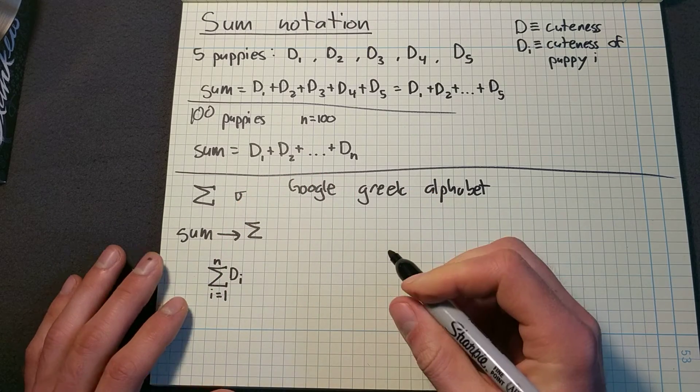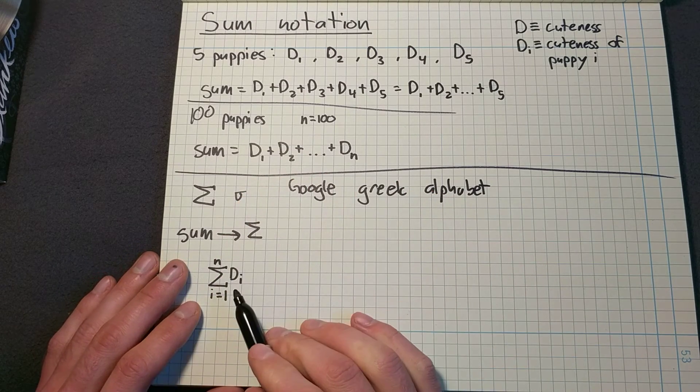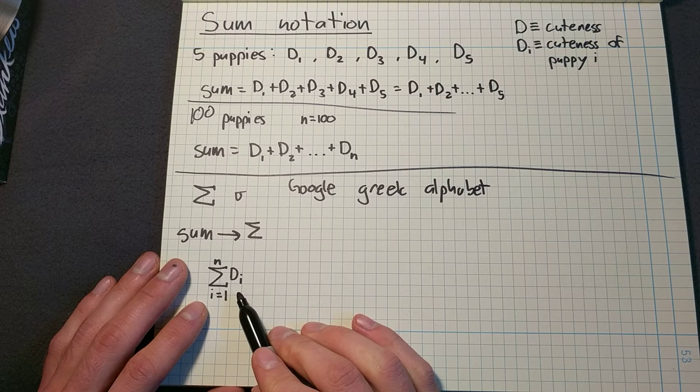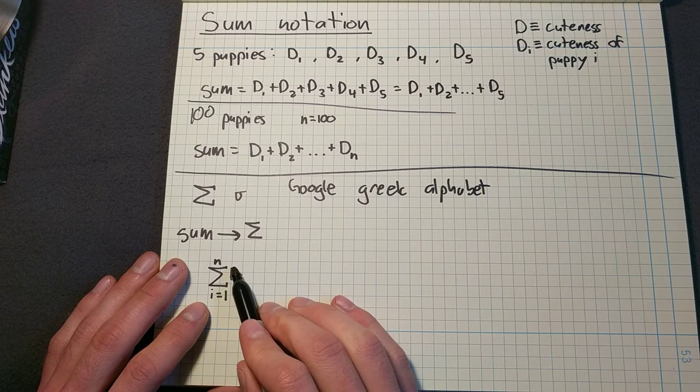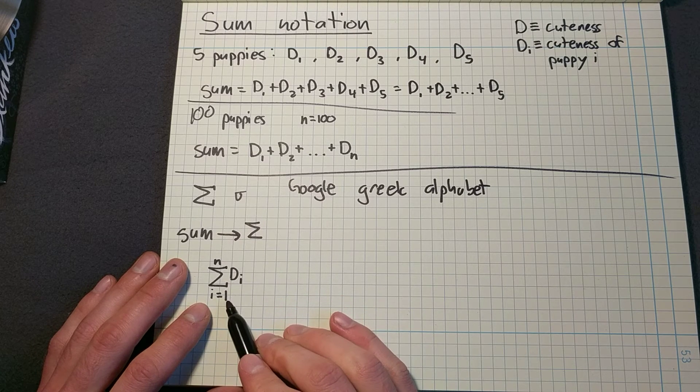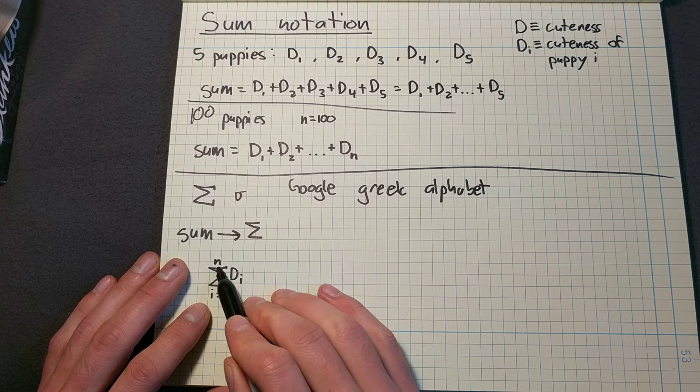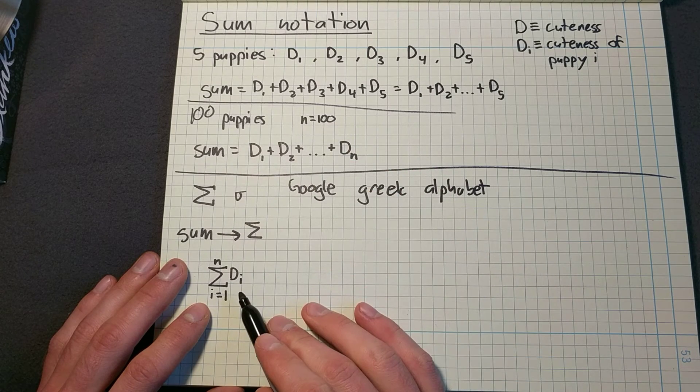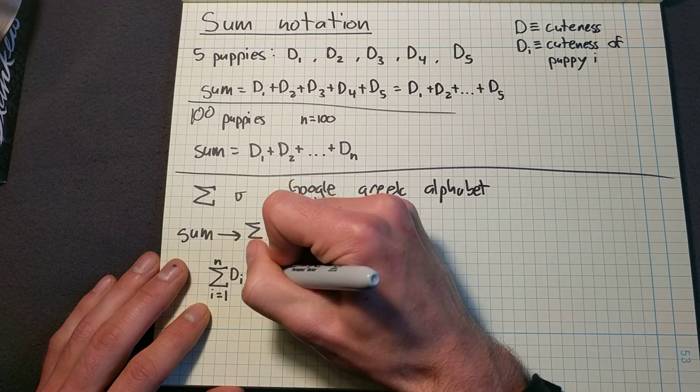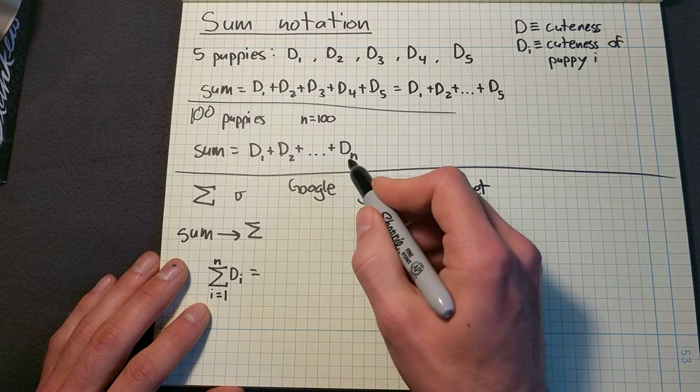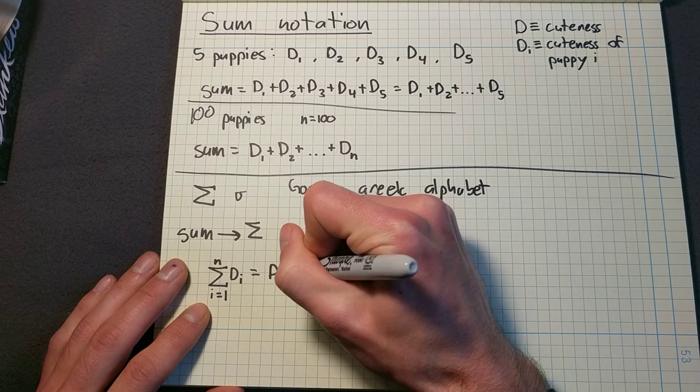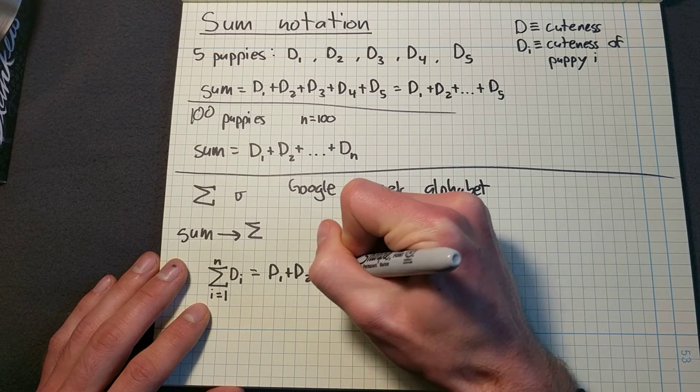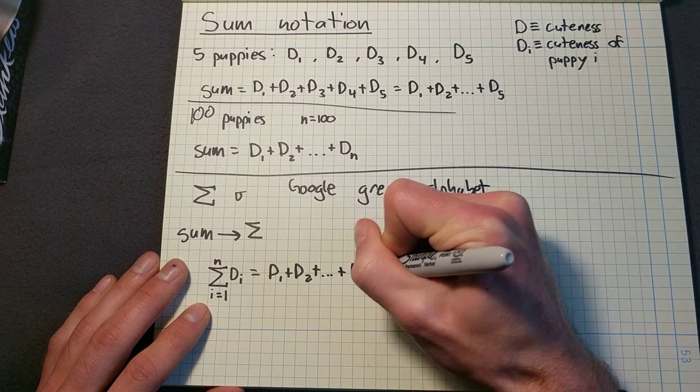So what does all of this mean? This means that I'm going to take the sum of all the Ds starting with D one up to D N. N is equal to 100. So writing this out, it's exactly like this sum here, D one plus D two plus dot dot dot plus D N.